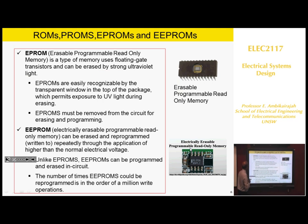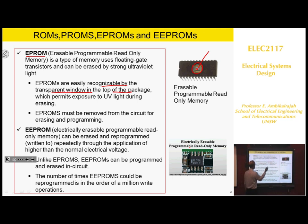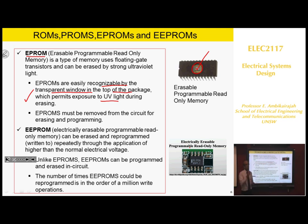The next type is erasable programmable read-only memory — EPROM. These memories are recognizable by a transparent window on the top of the package. By exposing the chip to ultraviolet light, you basically wipe the data. Then you can reprogram it, and if you want to wipe it again you pass it through ultraviolet. The difficulty with this is that you have to take the chip out, put it in the ultraviolet eraser, then put it back and rewrite it.